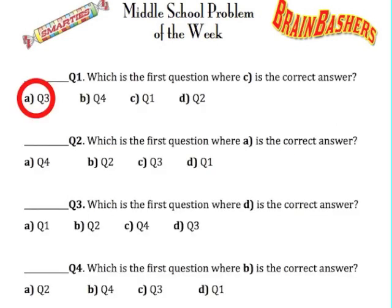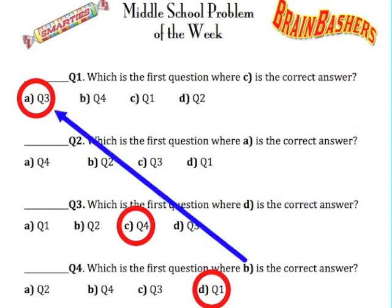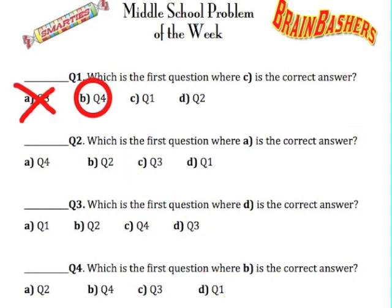Well, we're now going to play what if. What if the answer to question one was A? Then that would lead to this, which leads to this, but then we would have a contradiction. So the answer to question one can't be A.